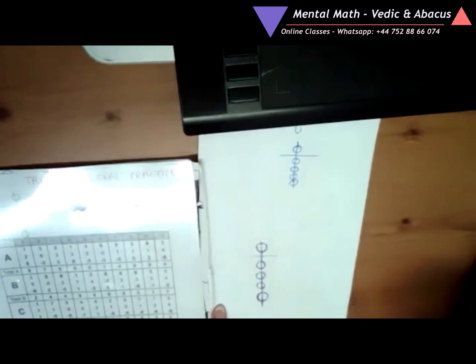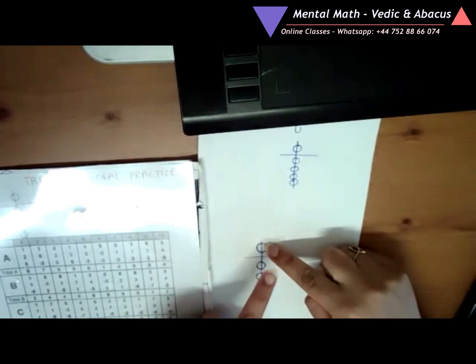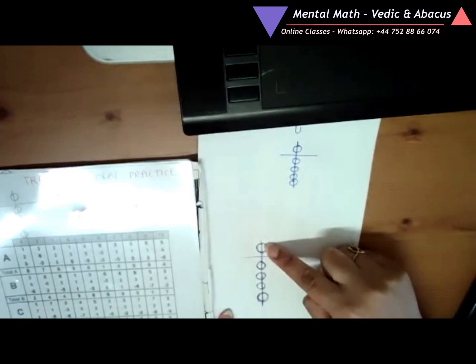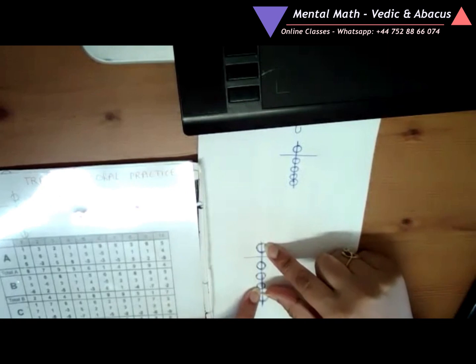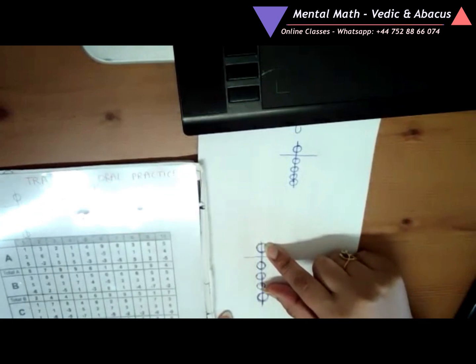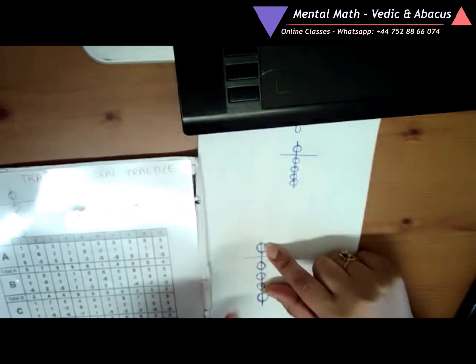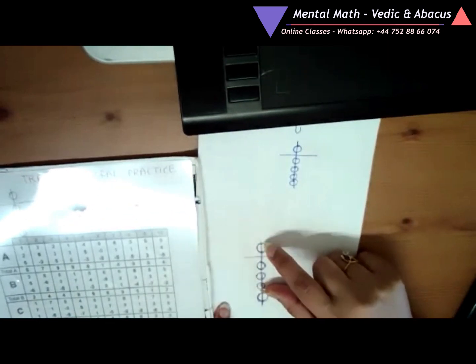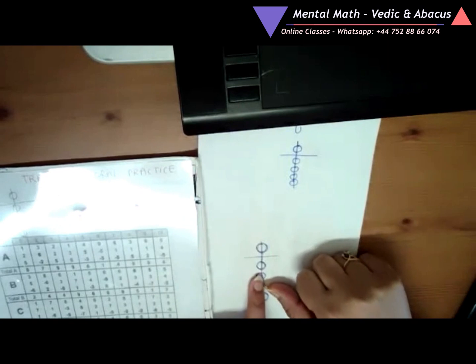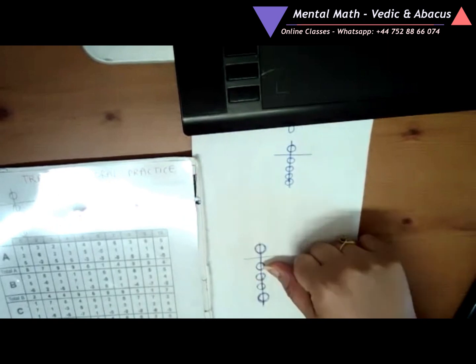Next question: 5. Put your finger on 5. Plus 3, place your thumb on 3 beads. Minus 7, so minus 7 is you have to take away 5 and then take away 2. So place your thumb on here. Answer is 1.